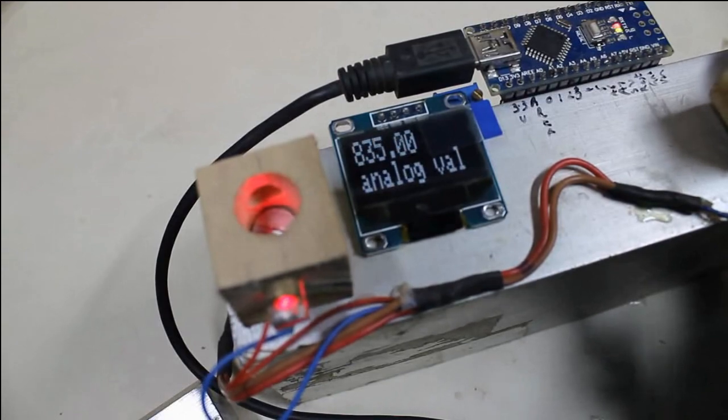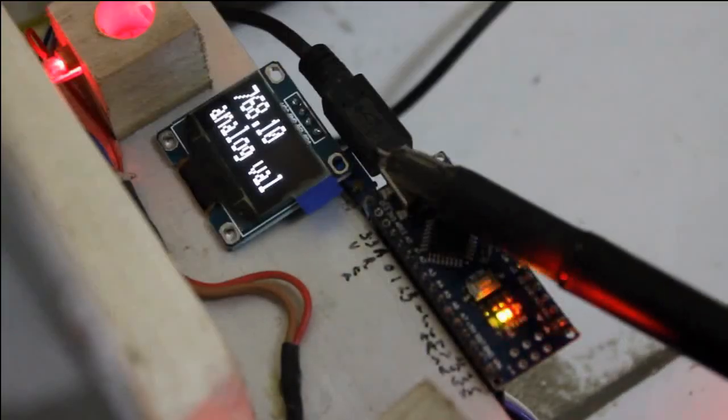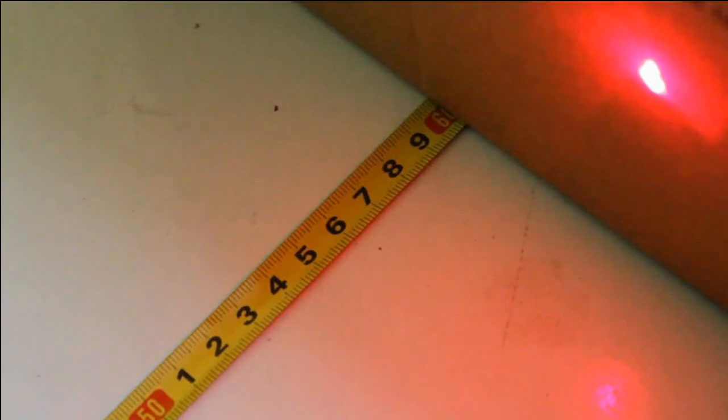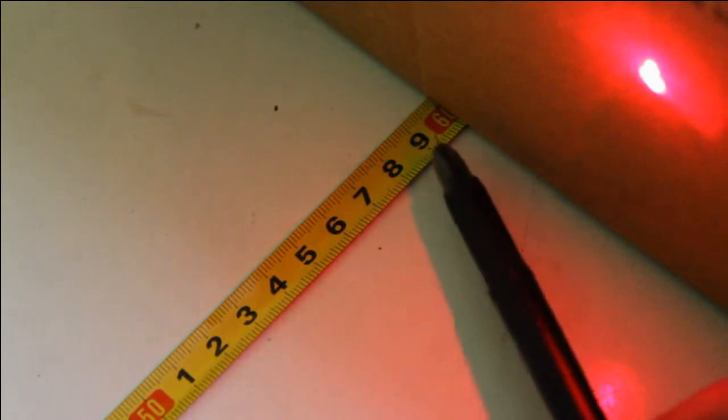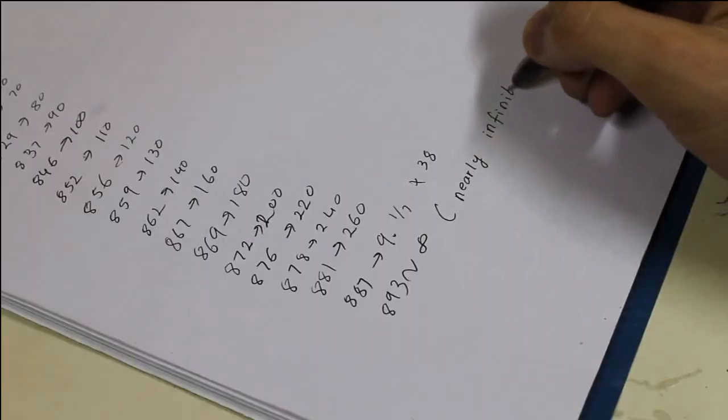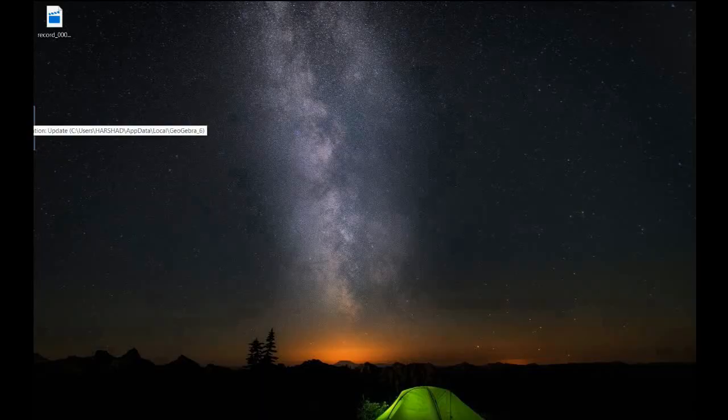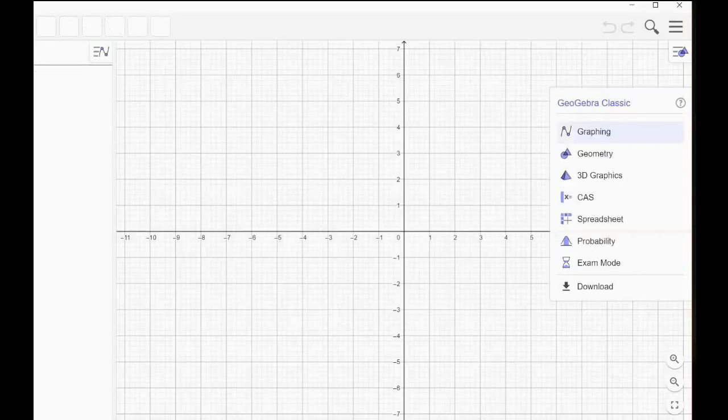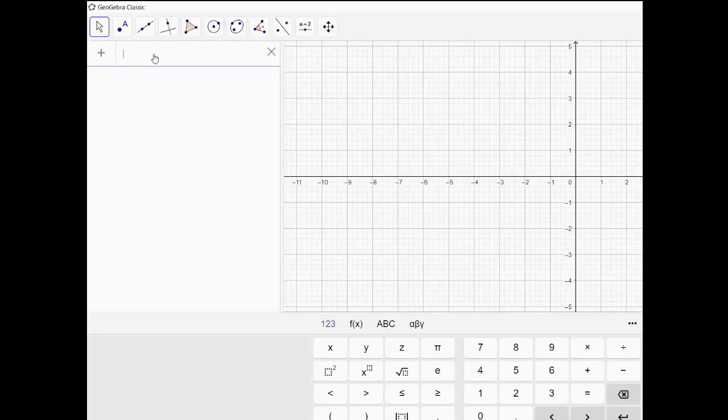I programmed the nano to display the analog value and grabbed my measuring tape, spread it, took an Amazon box and started noting the analog value against the actual value. After dozens of data points, I opened my favorite app GeoGebra and started adding points with x-coordinate as analog value and y-coordinate as the true value.